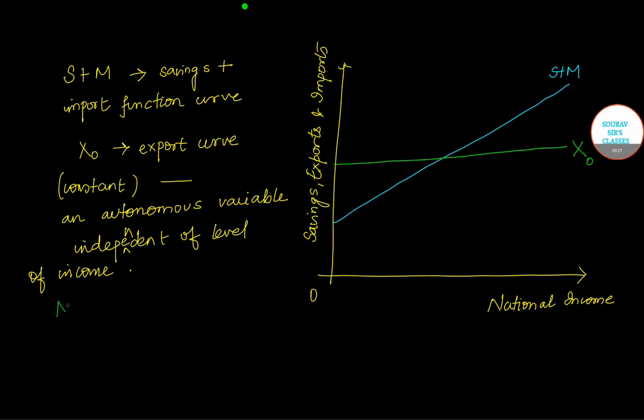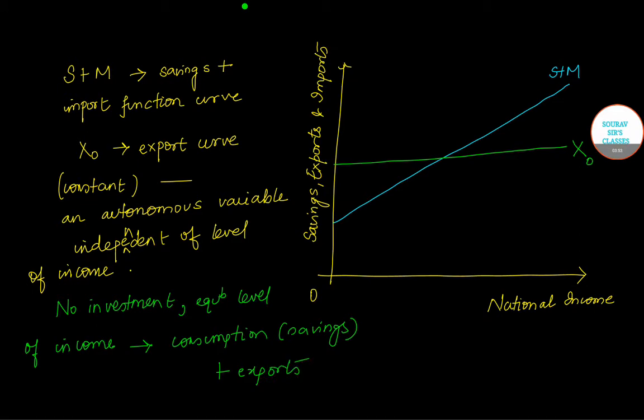Now further, to simplify the analysis more, we assume that there is no investment. That's why we haven't written investment on the vertical axis. Equilibrium level of national income will therefore be determined by consumption, savings, and our exports. Let us begin. They are getting intersected at, say, I'll mark this point as E₀.